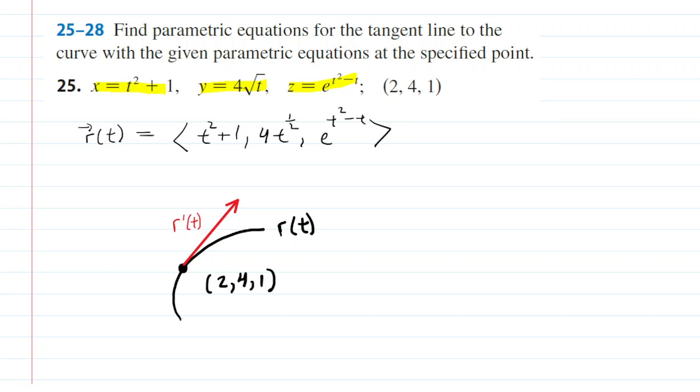Now, we've made a little sketch here just to kind of give us a flavor of what's going on. We have a point given to us in the question. It has coordinates 2, 4, 1. And in order for us to find the parametric equations for the tangent line, we're going to have to calculate the derivative of our vector function that we just wrote out.